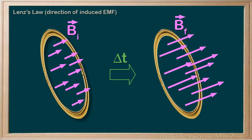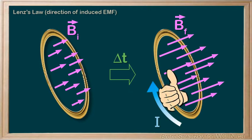And this time, let's assume that the induced EMF creates a current going in the clockwise direction. And again, we know that current, induced or not, creates a magnetic field around it. We'll use our right-hand rule to determine the direction of this induced magnetic field.